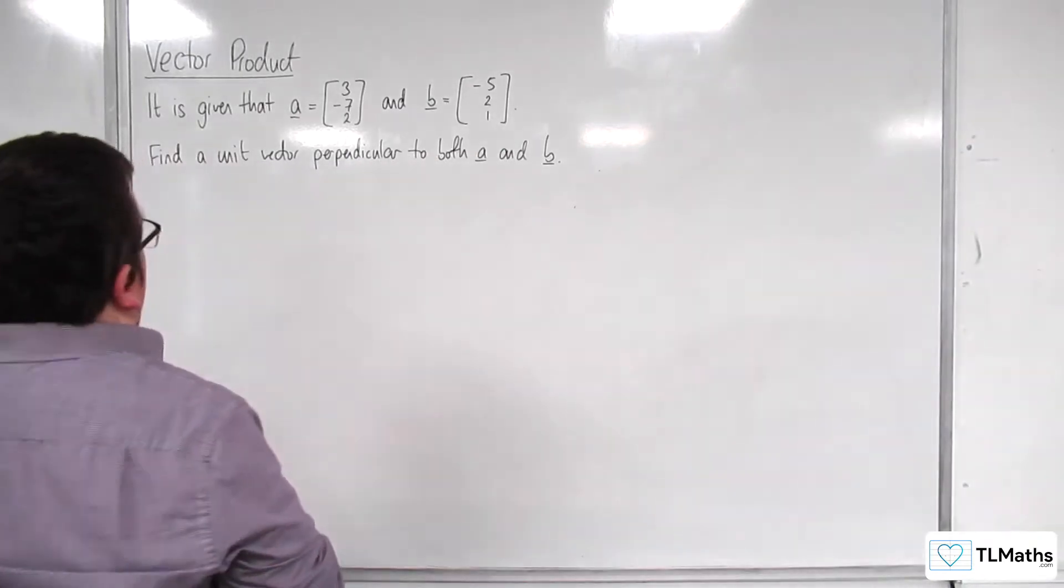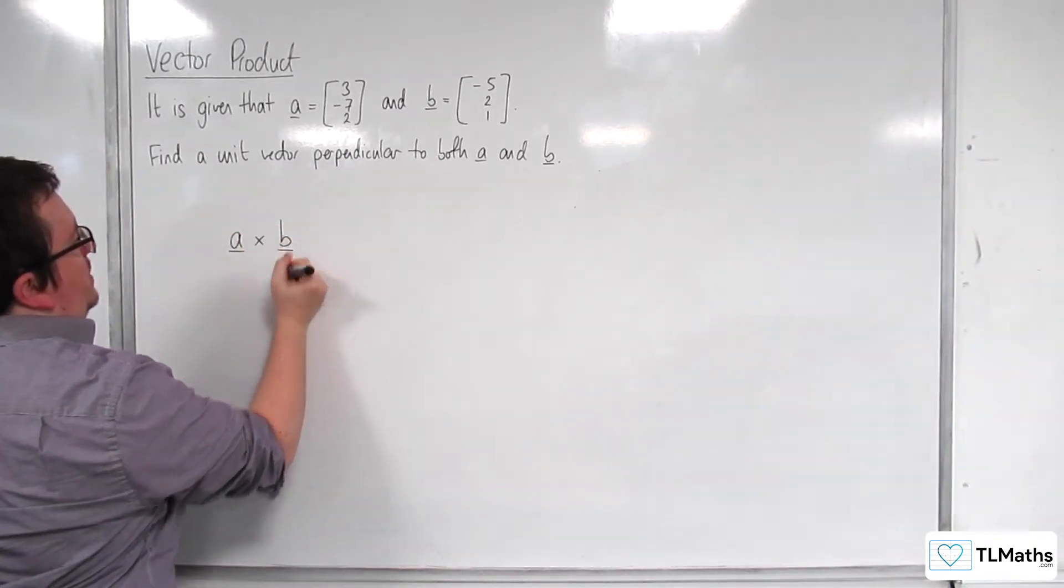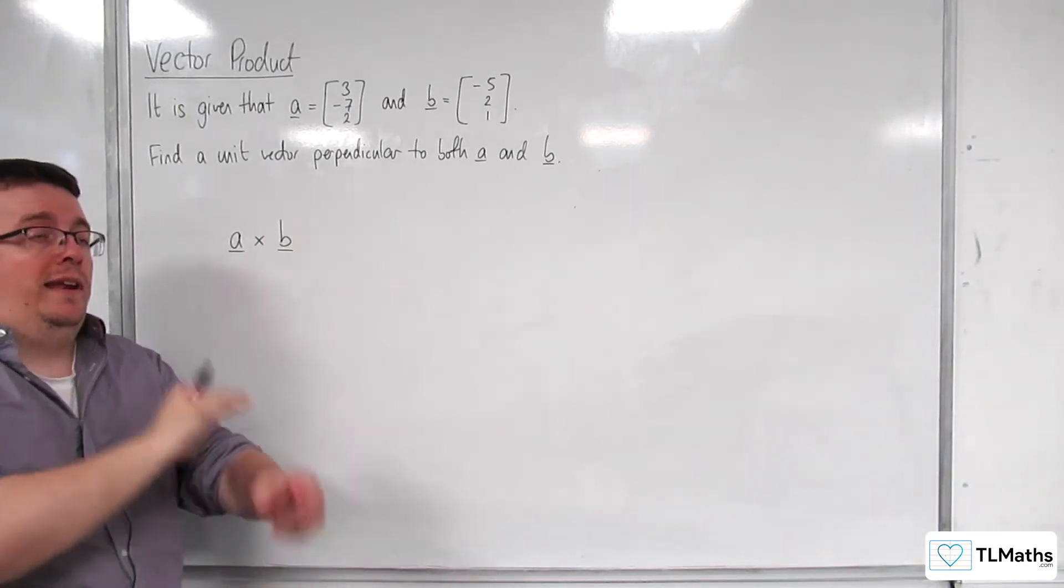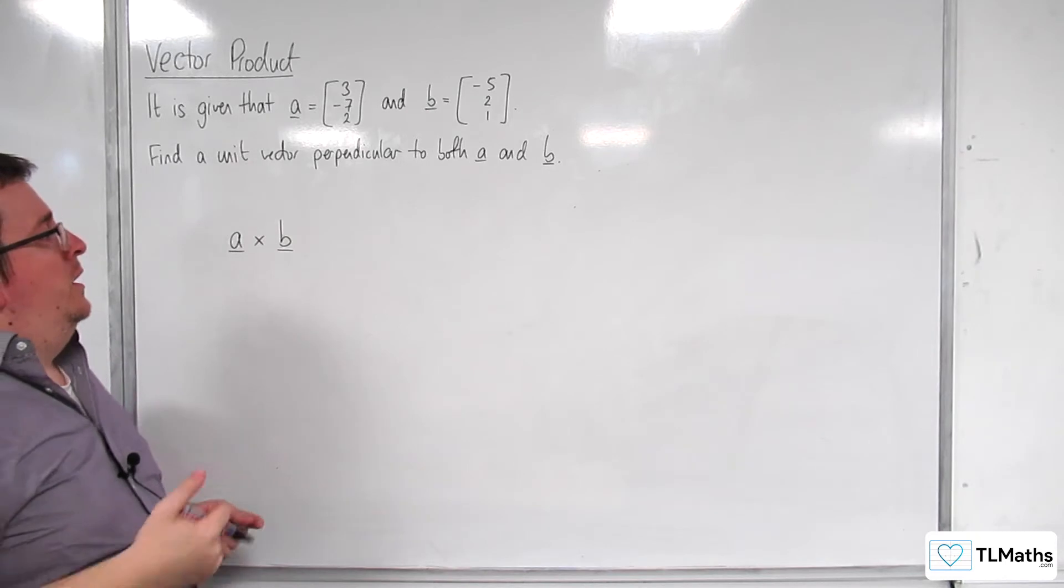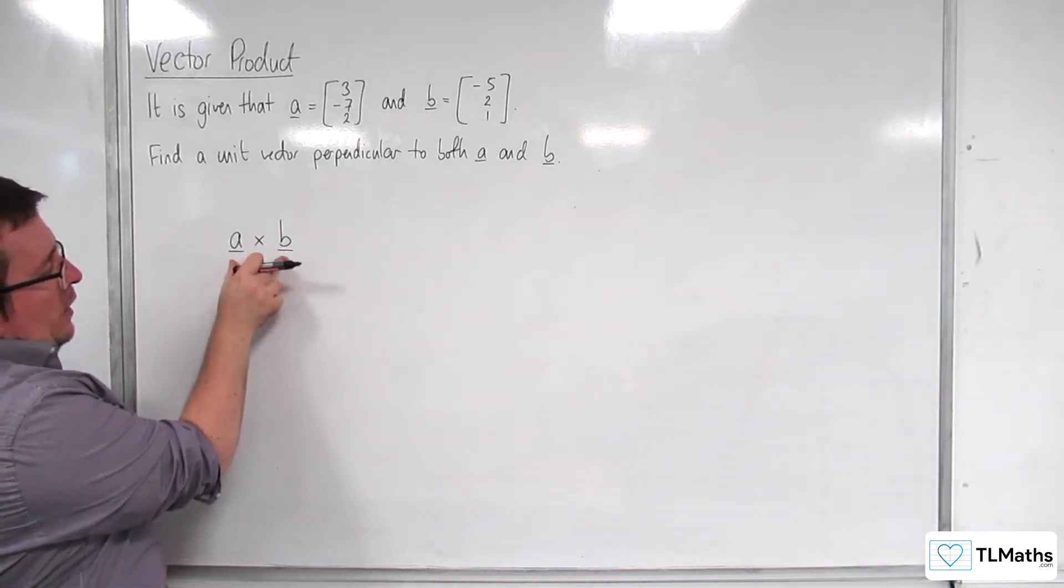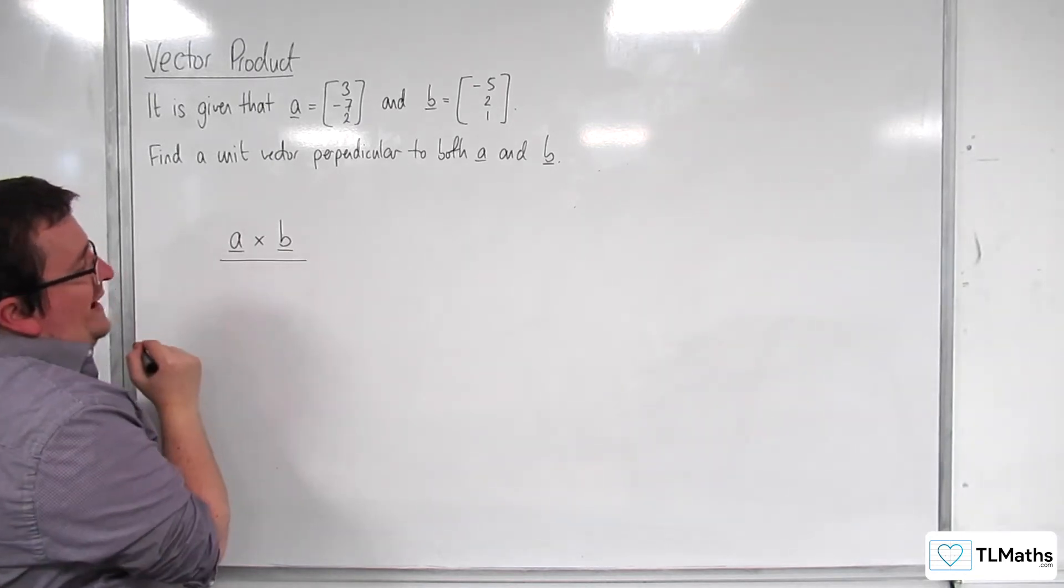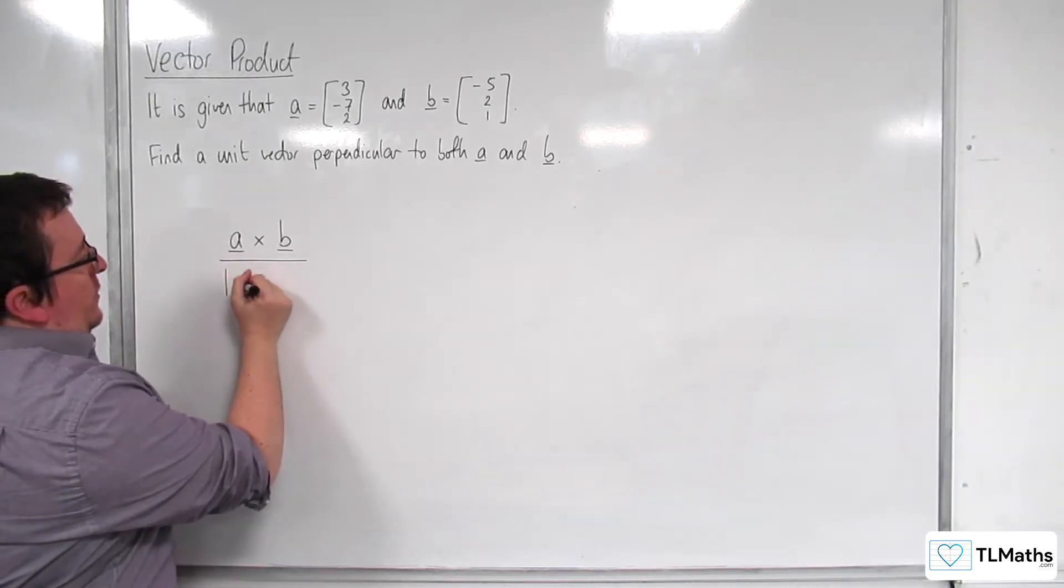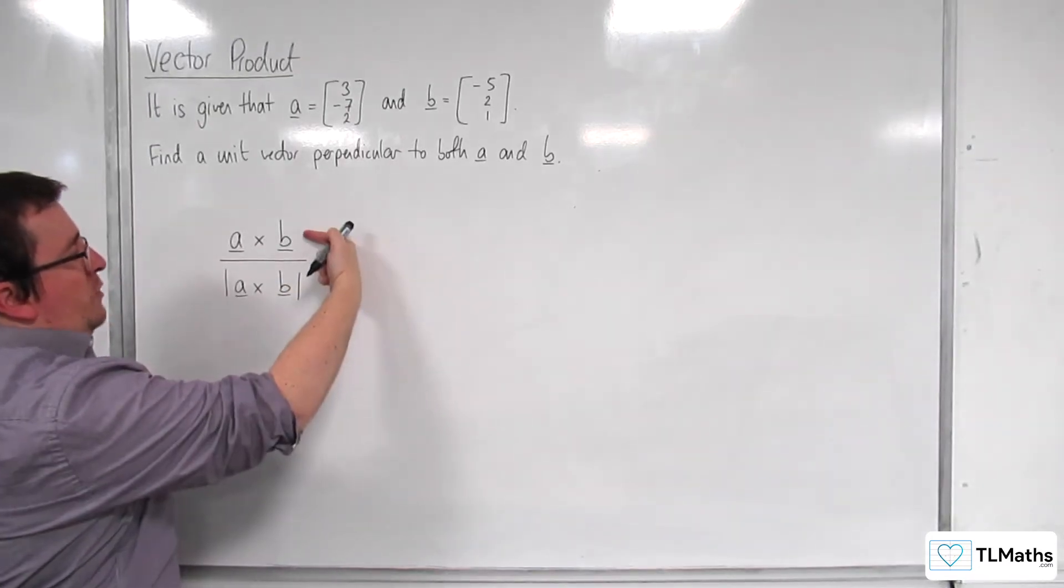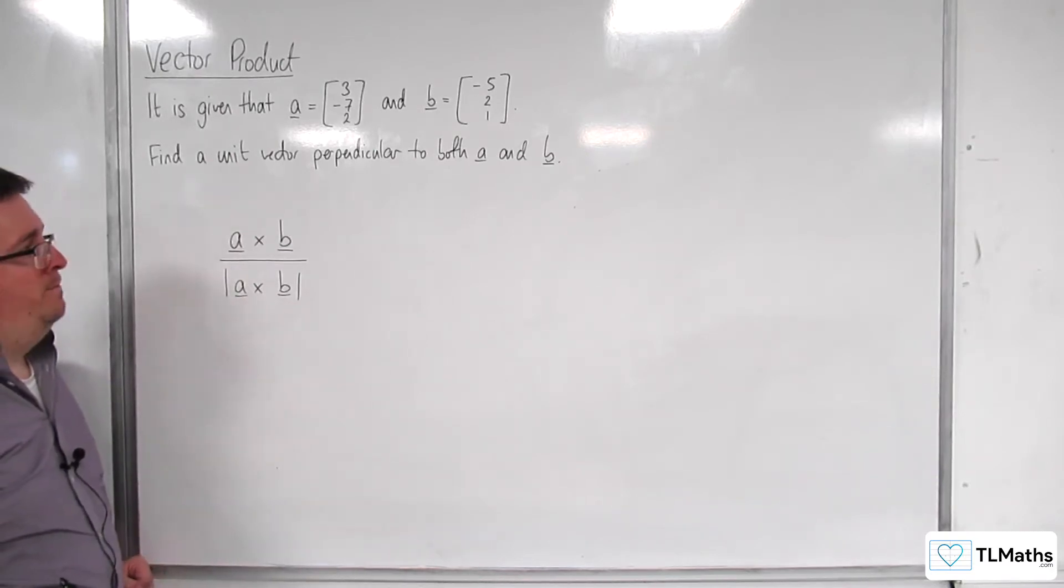So we have this vector product, which will enable us to get a vector that is perpendicular to both a and b. But this is not necessarily of unitary length. So in order to make this of unitary length, of length 1, we need to divide by the length of the vector. So we get the cross product, and we're going to divide it by the length of the cross product.